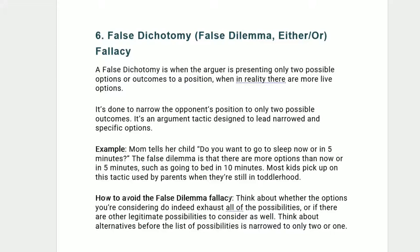Six, false dichotomy — false dilemma, either-or fallacy. A false dichotomy is when the arguer presents only two possible options or outcomes when in reality there are more live options. It's designed to lead to narrowed and specific options. Example: Mom tells her child, 'Do you want to go to sleep now or in five minutes?' The false dilemma is that there are more options, such as going to bed in ten minutes. Most kids pick up on this tactic in toddlerhood. How to avoid it: think about whether the options exhaust all possibilities, and consider alternatives before narrowing the list.